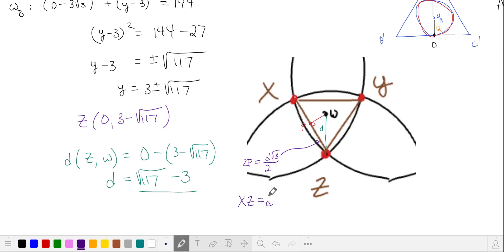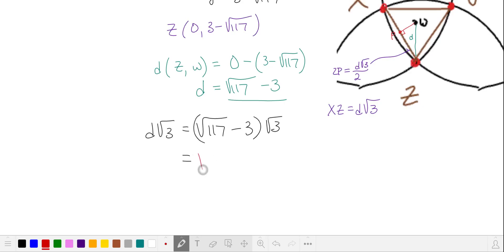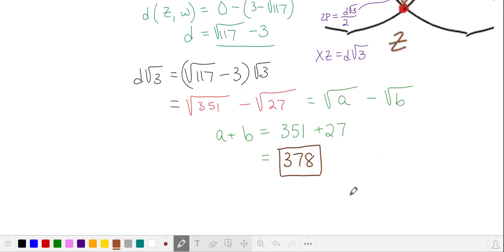So the side length is going to be the distance multiplied by the square root of 3. The problem statement asks for us to keep everything underneath the square root signs and express it as the difference of these two square roots. Once we find a and b, we add them. And our answer is 378.